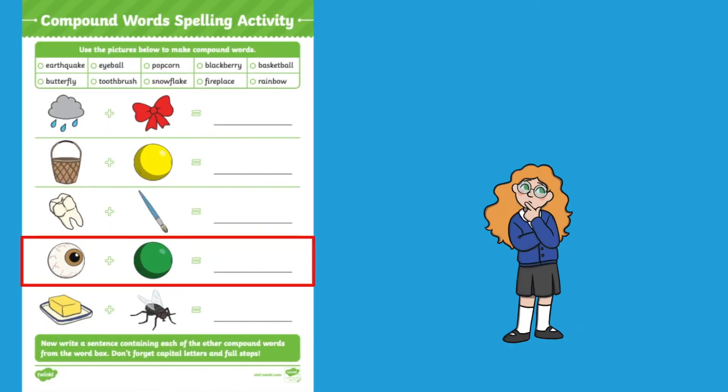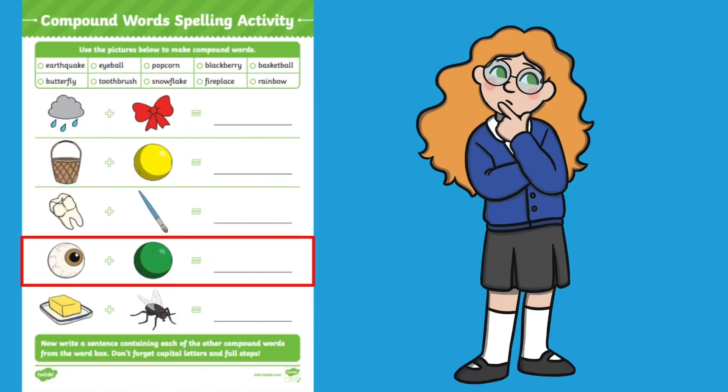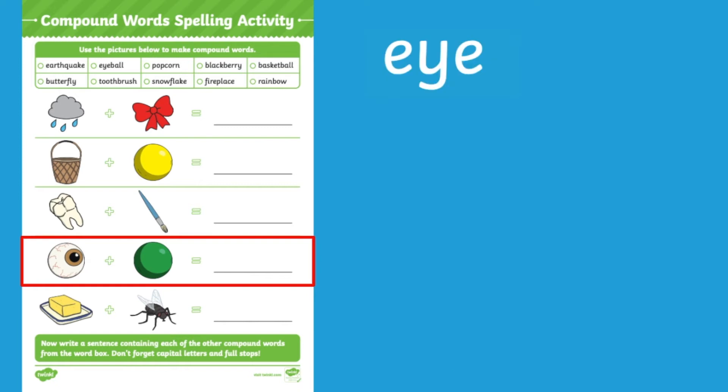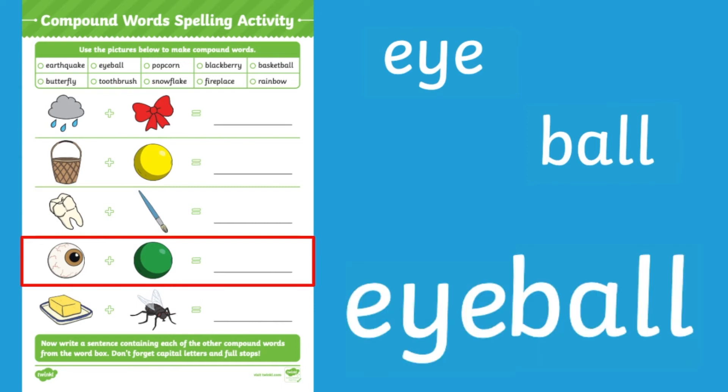If your children are struggling to figure out what the compound word is, ensure that they're breaking it down into the two pictures. Begin by concentrating on the first picture and what it is, and then looking at the second picture. Your children can then investigate what the compound word must be.